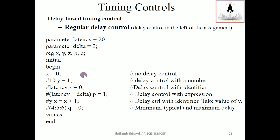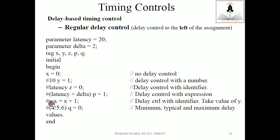I've declared a parameter latency equal to 20 and parameter delta equal to 2. Register variables x, y, z, p, and q are declared. In the initial block: x is initialized at time 0; after 10 time units y equals 1; after latency (20 units) z equals 0; and after 20 plus delta (22 units) p equals 1. So you read it as: after 10, y=1; at 10+20=30, z=0; at 30+22=52, p=1.